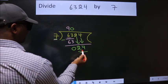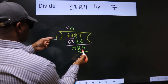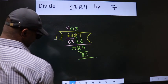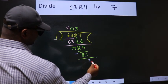A number close to 24 in 7 table is 7 threes, 21. Now we subtract. We get 3.